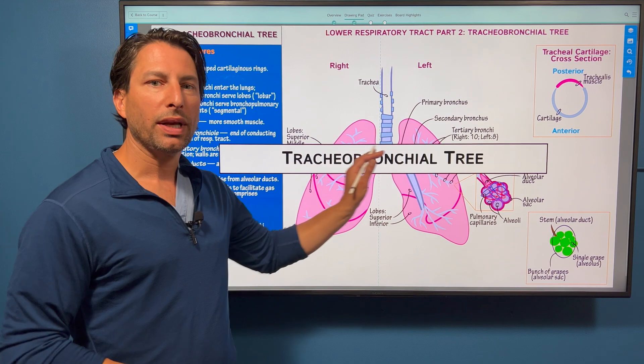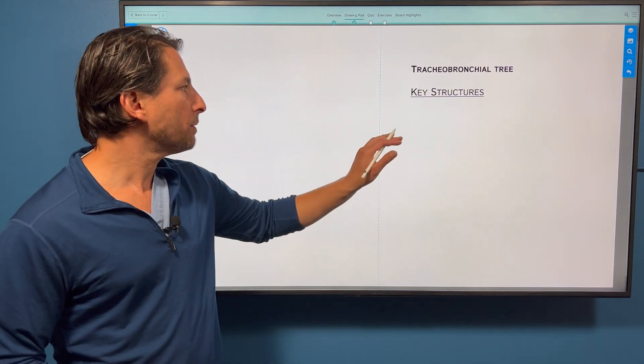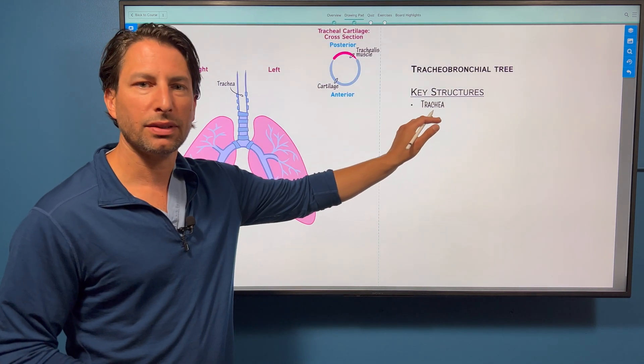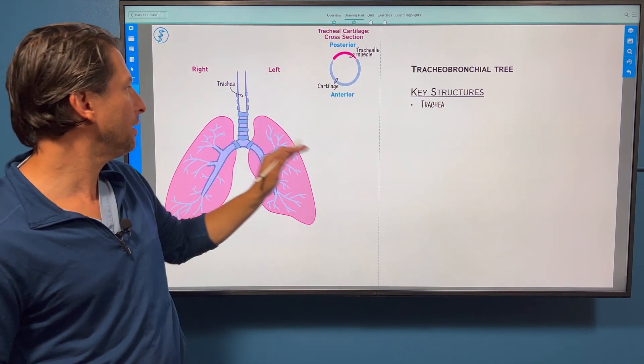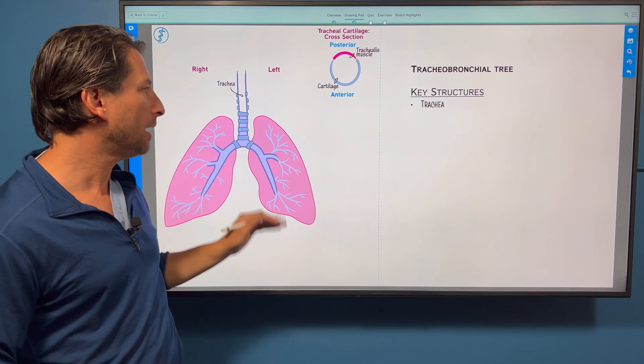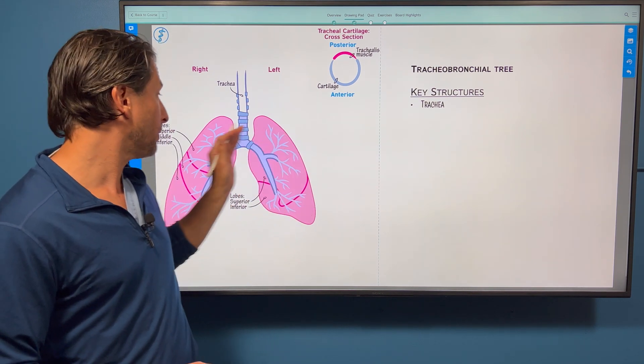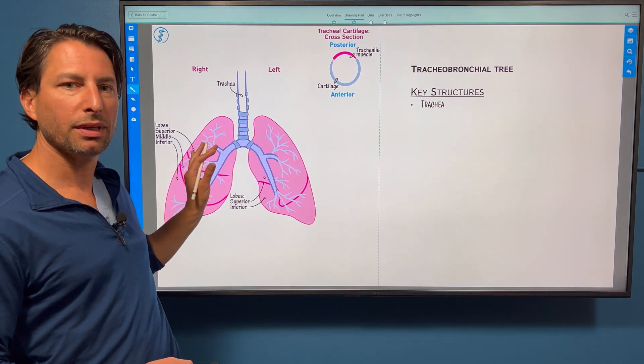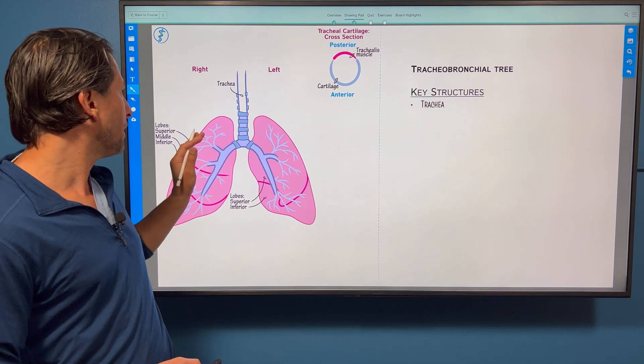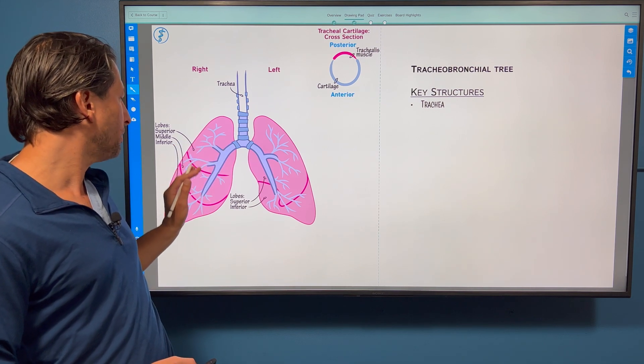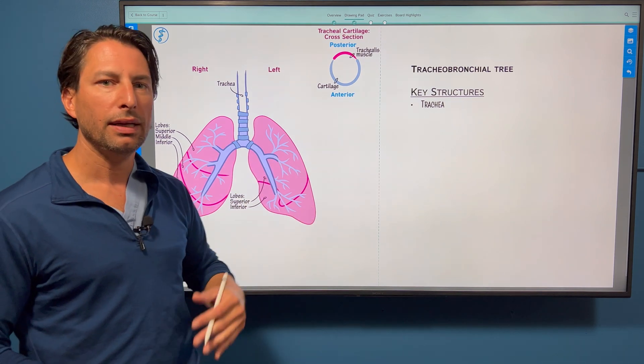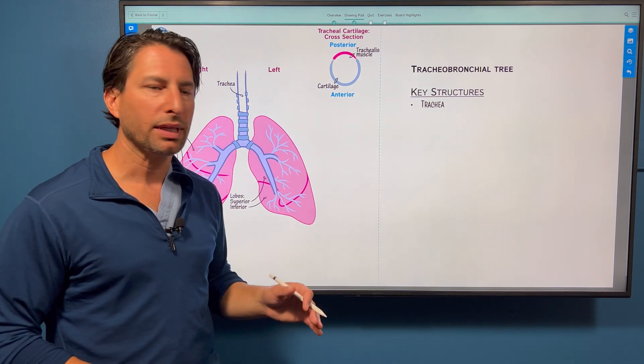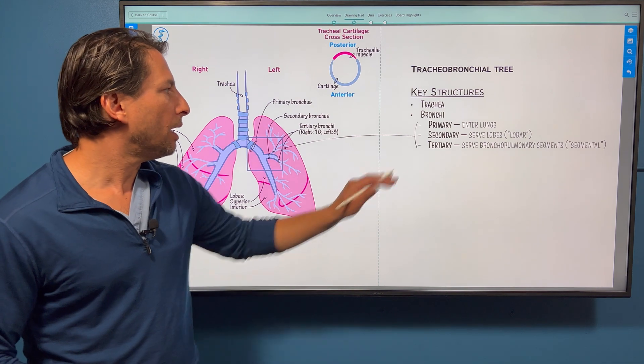Moving on to the tracheobronchial tree itself. Some key structures, obviously starting with the trachea. Here we have it in cross-sectional anatomy. Here's our trachea coming down. We quickly divide the lobes of the lung. On the right side, we have superior, middle, and inferior. On the left side, we have superior and inferior.